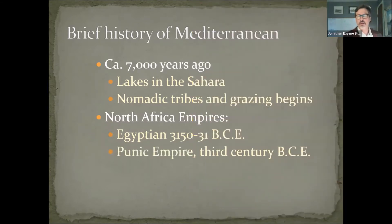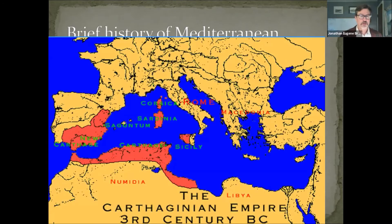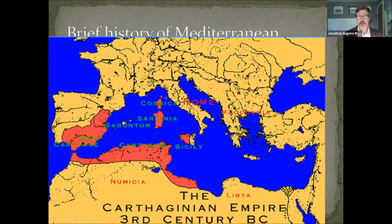In addition to the ancient Egyptian Empire, another pre-Roman empire is the Punic Empire. This we see further to the west, including what's today Tunisia, where the city of Carthage is located — right across from Rome and Sicily, in the middle of the Mediterranean — as well as large areas of the Iberian Peninsula where Spain is, and even out along the Atlantic coast. The Carthaginian Empire was very much a seafaring empire, and with the rise of the Roman Republic, Carthage became one of the great enemies of Rome. The Punic Wars were a defining element of this period.